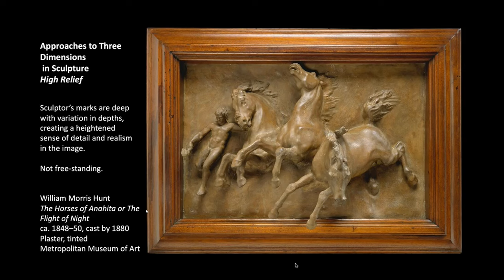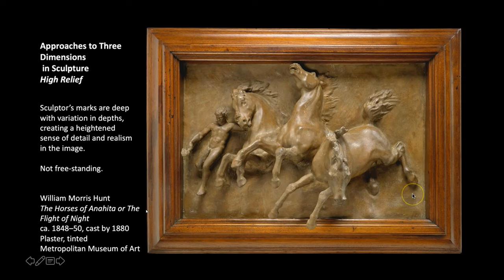High relief has the ability to really blend the two-dimensional world with the three-dimensional world because of these deep variations in depth. You can create different details — notice how very detailed the faces are, but then the mane kind of blends in. You can vary detail and depth to create a very realistic type of space within the image. But still like low relief, this is not freestanding — even though you could put your hand behind the horse's front legs, you cannot walk around the entire work.